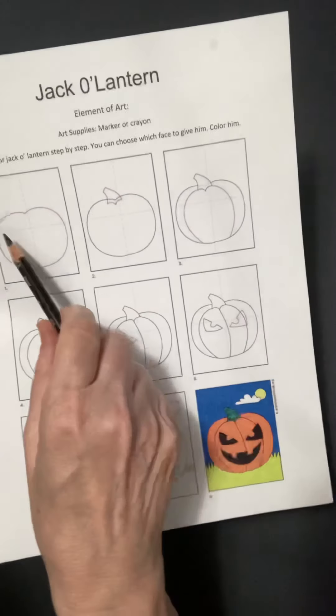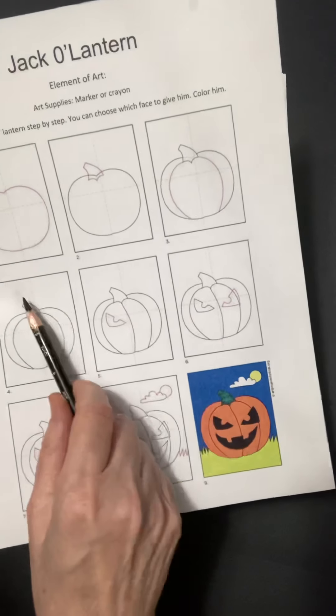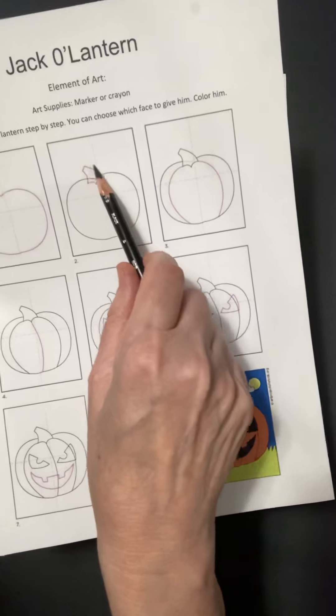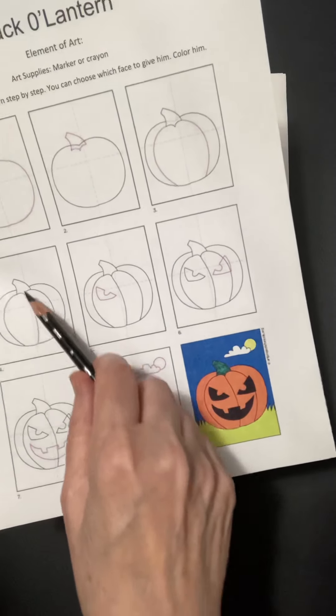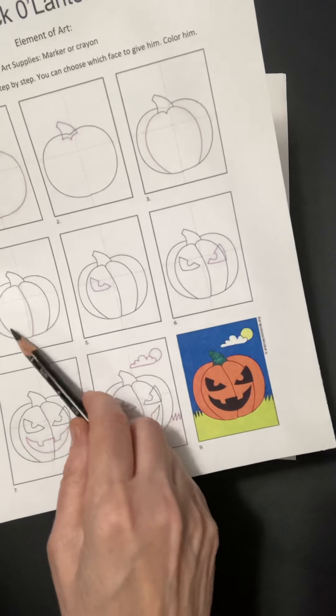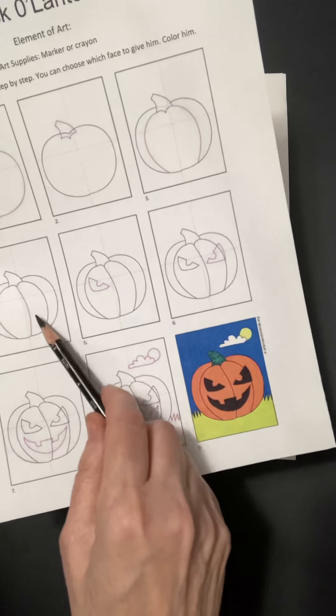So we're going to start with the shape, really big on the paper, and putting the stem on and the lines. Now that shows form in art. That shows that it's dimensional. And so let's get started.